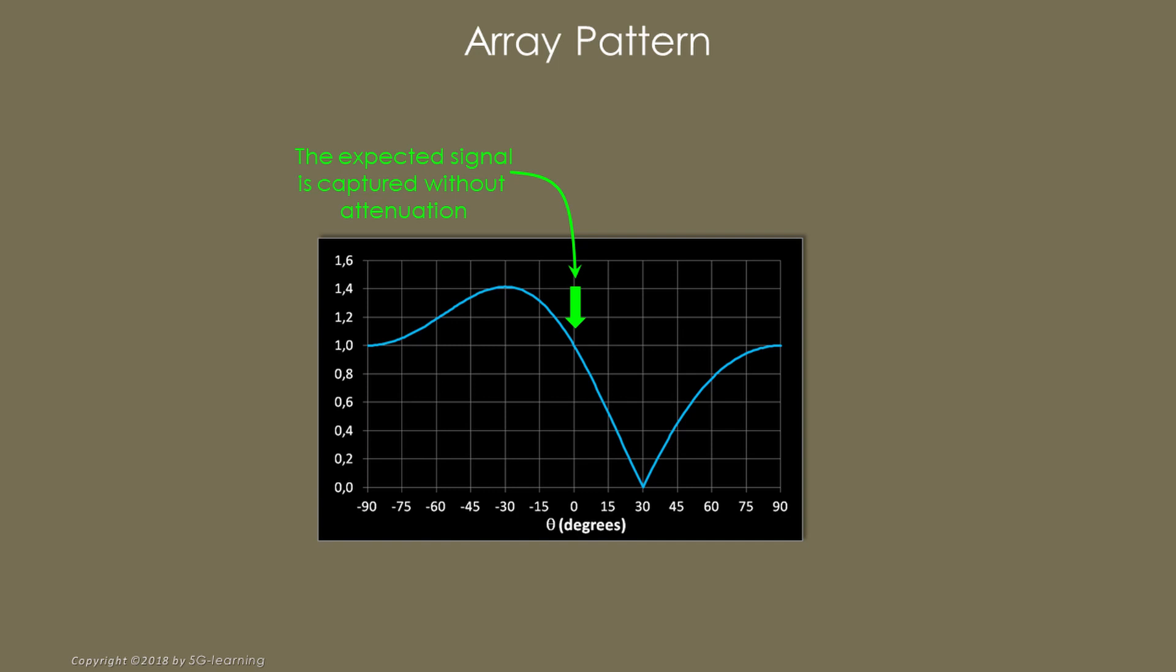On the other hand, the signal arriving from an angle of 30 degrees azimuth is completely blocked, because the array gain for this direction is null. Therefore, the selected waves have effectively blocked the interference.